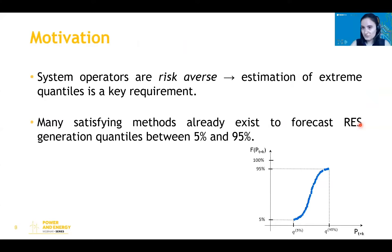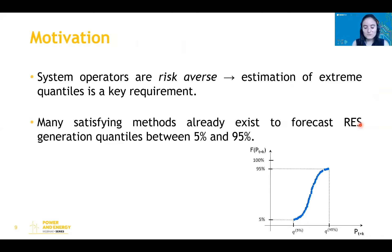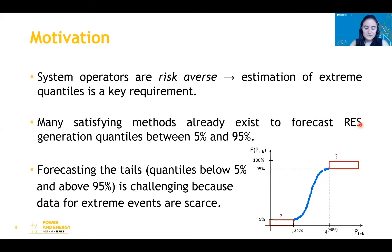What is the motivation for this work on extreme quantile forecasting? A poor forecast of extreme quantiles can have a high impact on different decision-making problems, particularly when decision-makers are highly risk-averse or the regulatory framework imposes high security levels. For instance, when setting operating reserve requirements, system operators usually define risk levels below 1%. Many satisfying methods already exist to forecast generation quantiles between 5% and 95%, but probabilistic forecasting of distribution tails — quantiles below 5% and above 95% — is challenging because data for extreme events are scarce.